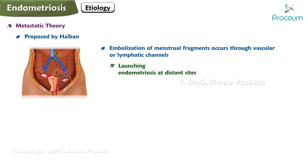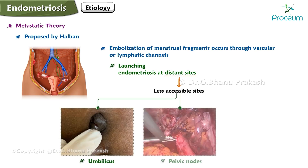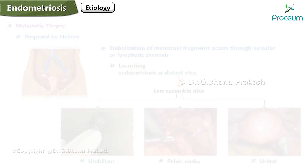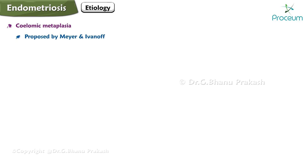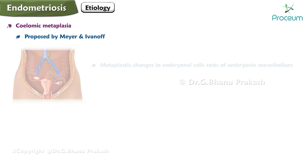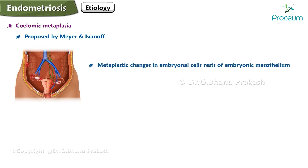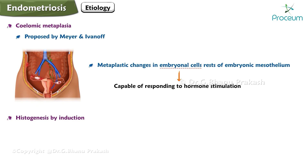This explains the occurrence of endometriosis at distant and less accessible sites like the umbilicus, pelvic nodes, and ureter. Coelomic metaplasia, proposed by Meyer and Ivanov, suggests that endometriosis arises as a result of metaplastic changes in embryonal cell rests of embryonic mesothelium.